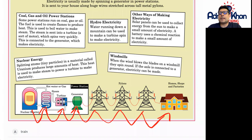Other ways of making electricity: solar panels can be used to collect energy from the sun to make a small amount of electricity. A battery uses a chemical reaction to make a small amount of electricity.